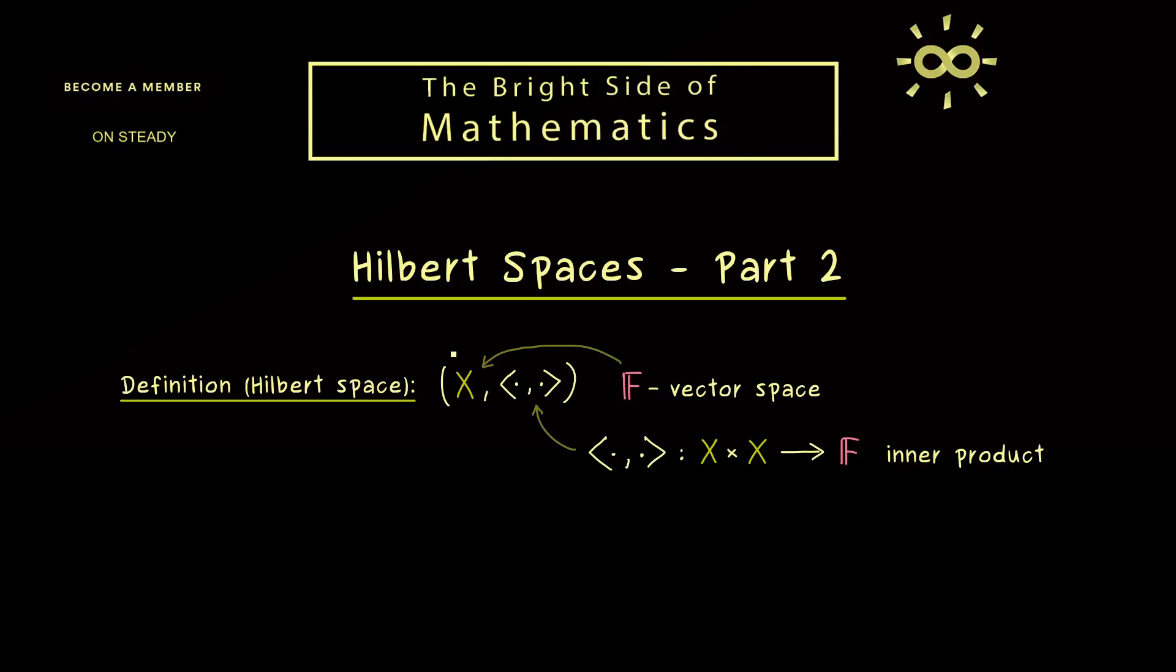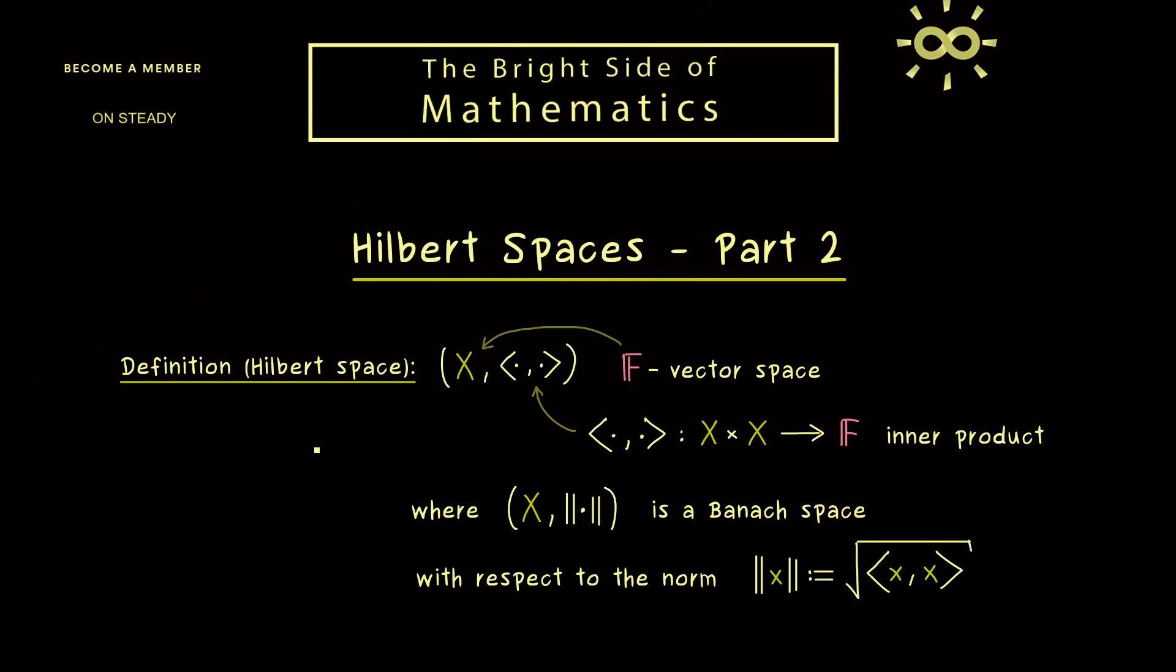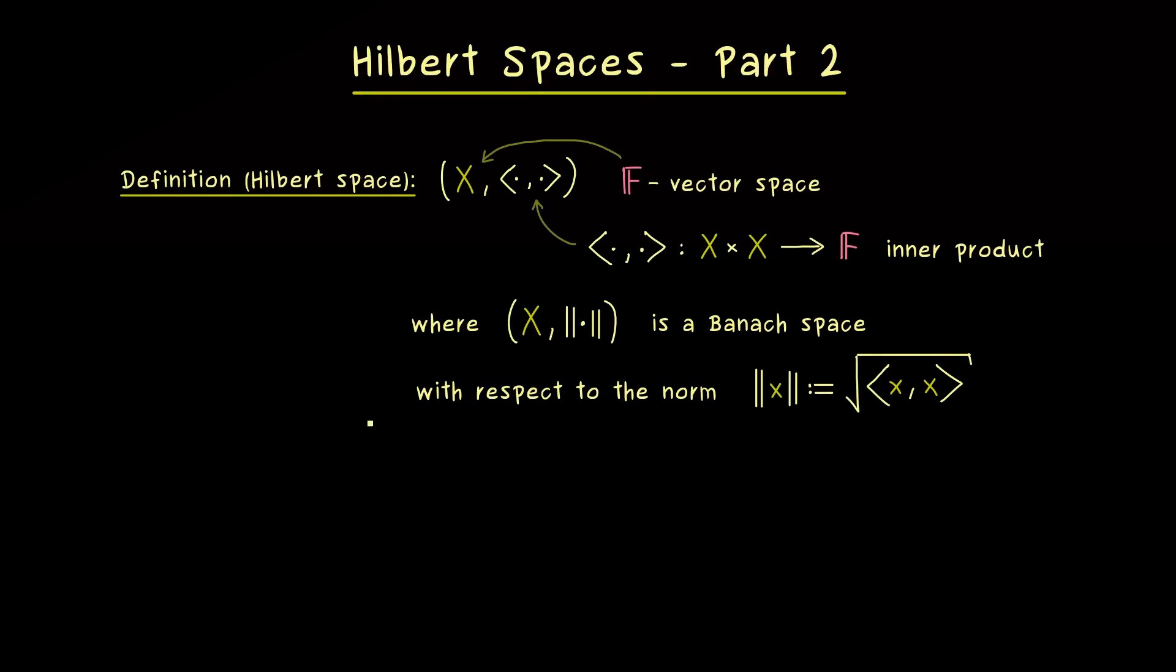And then what we get here is a so-called inner product space. And it gets a Hilbert space if it is complete. In other words, our vector space X also forms a so-called Banach space. And the corresponding norm here is simply defined by using the square root of the inner product. So this is something you should definitely remember for this course. A Hilbert space is just a very special Banach space, a Banach space where the norm comes from an inner product.